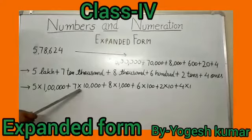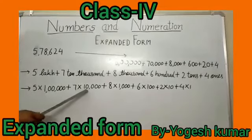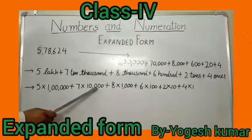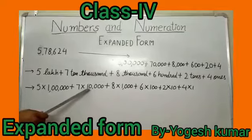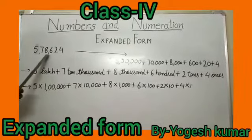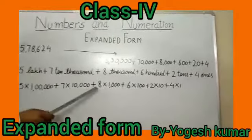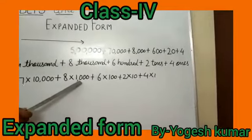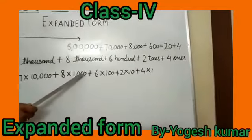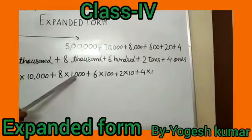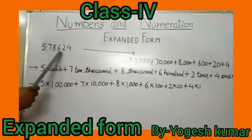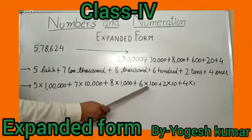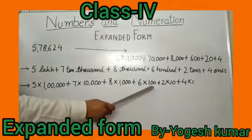7 multiplied by ten thousand. 8 lies on thousand place — 8 multiplied by one thousand. 6 lies on hundred place — 6 multiplied by one hundred.